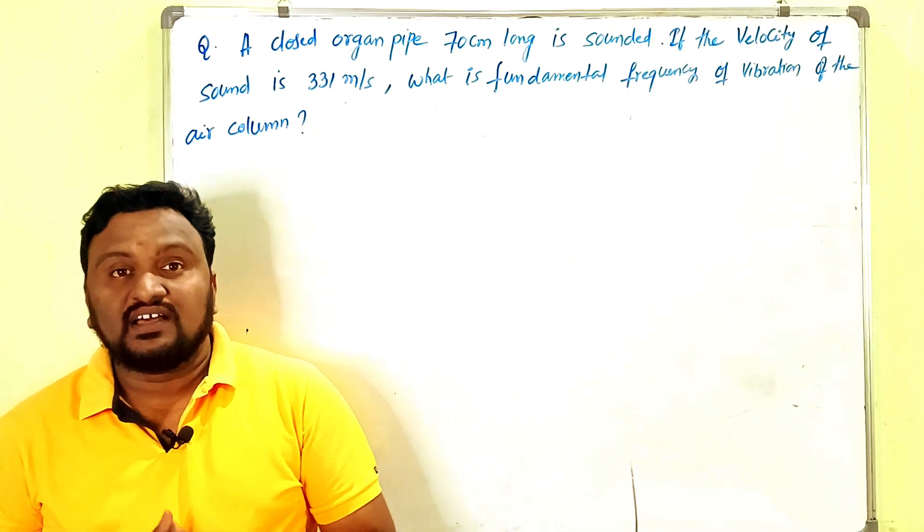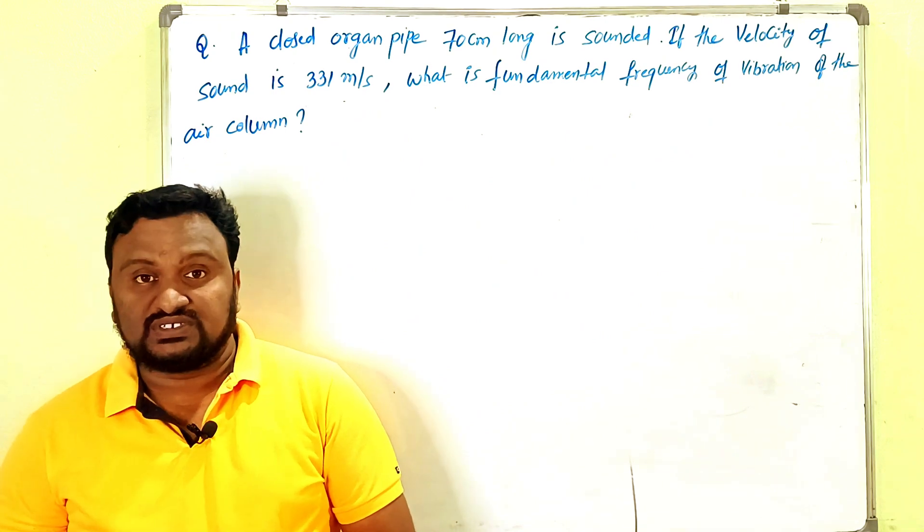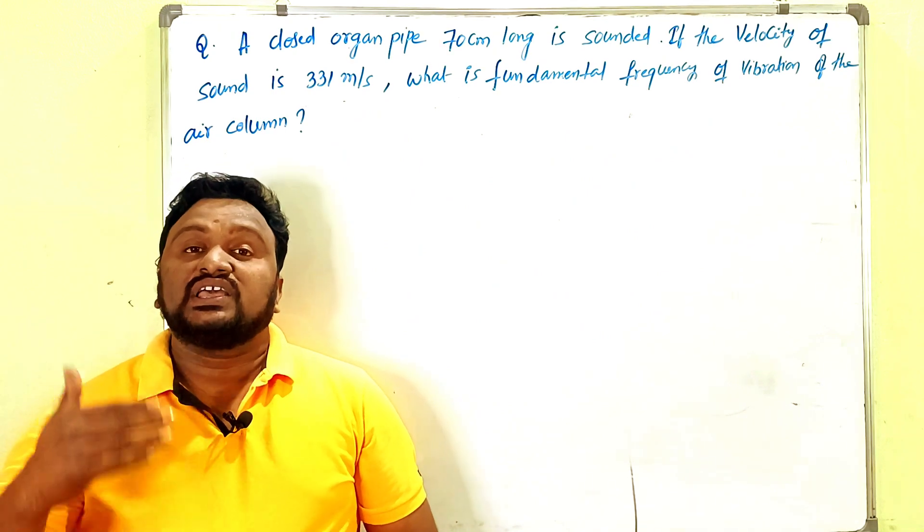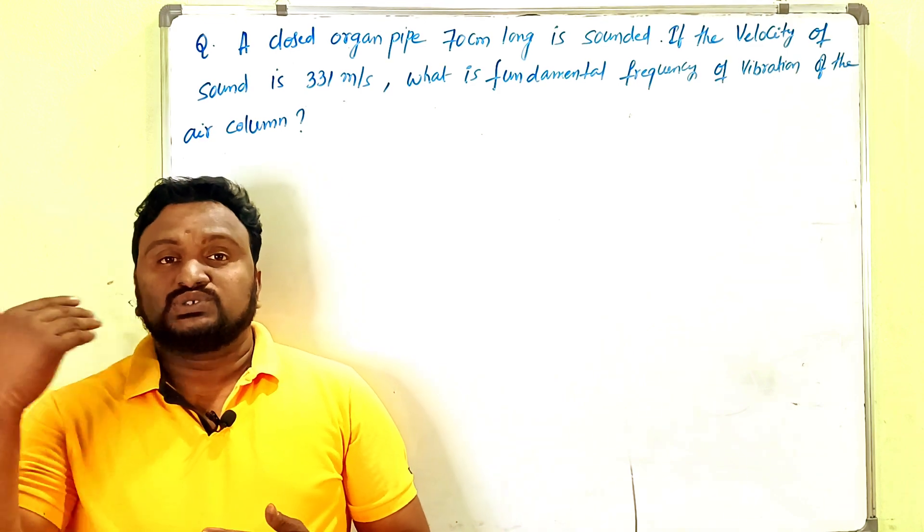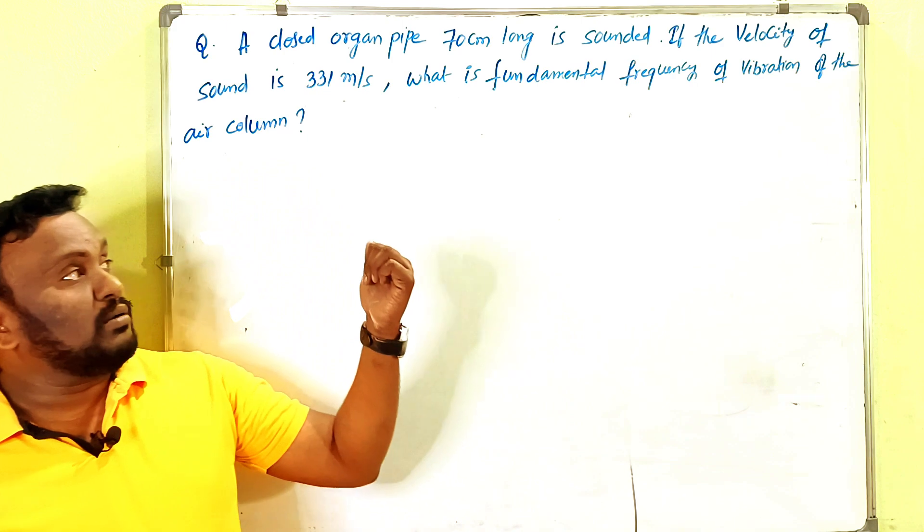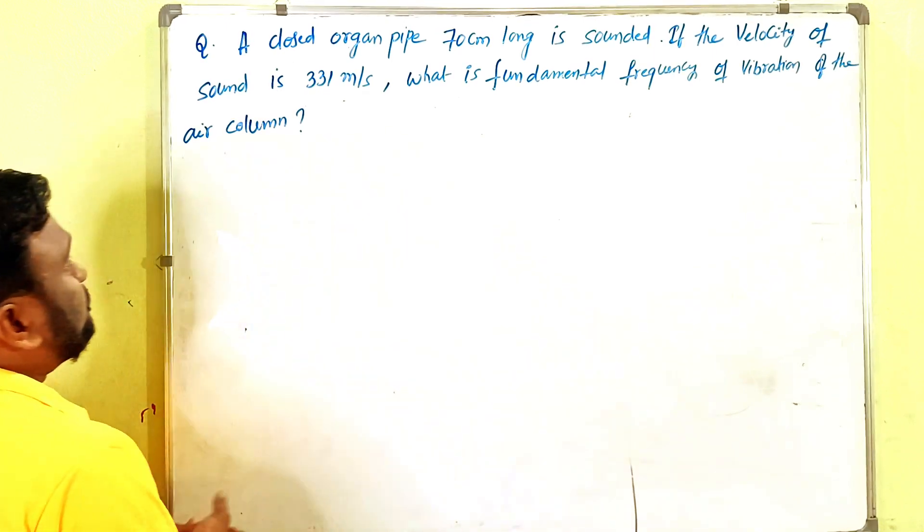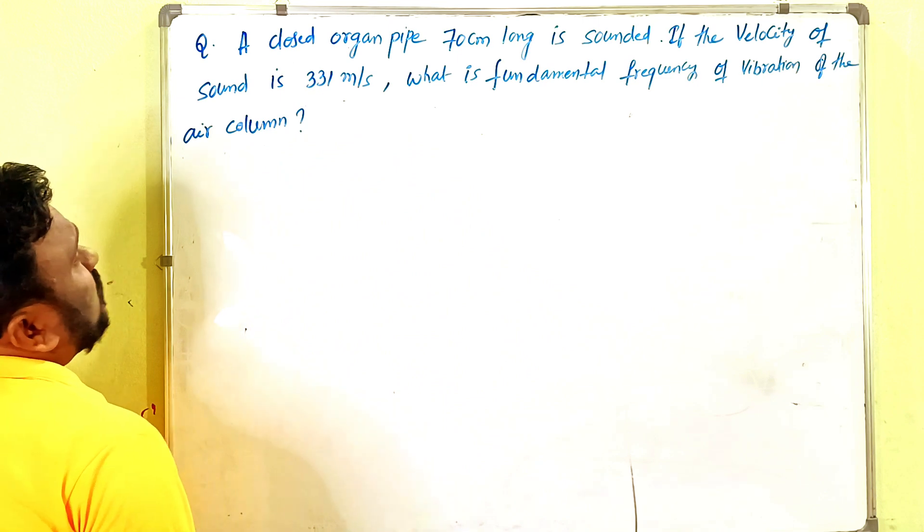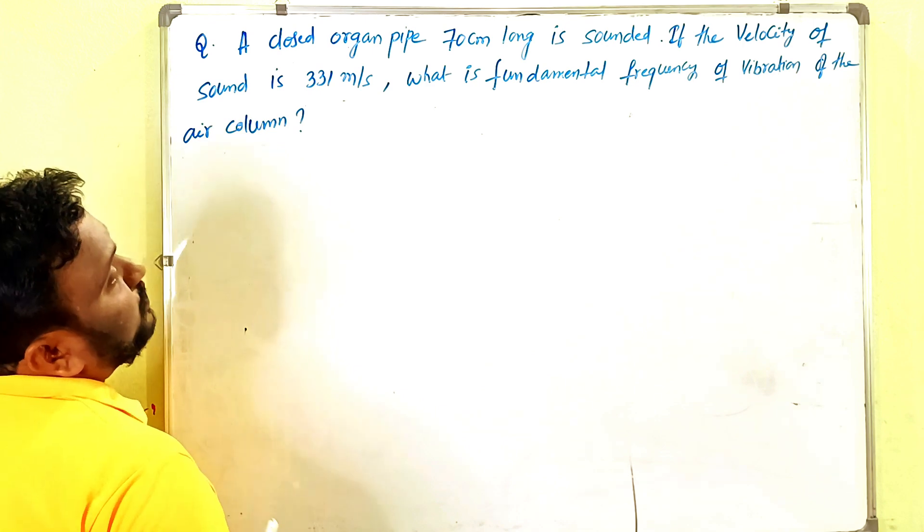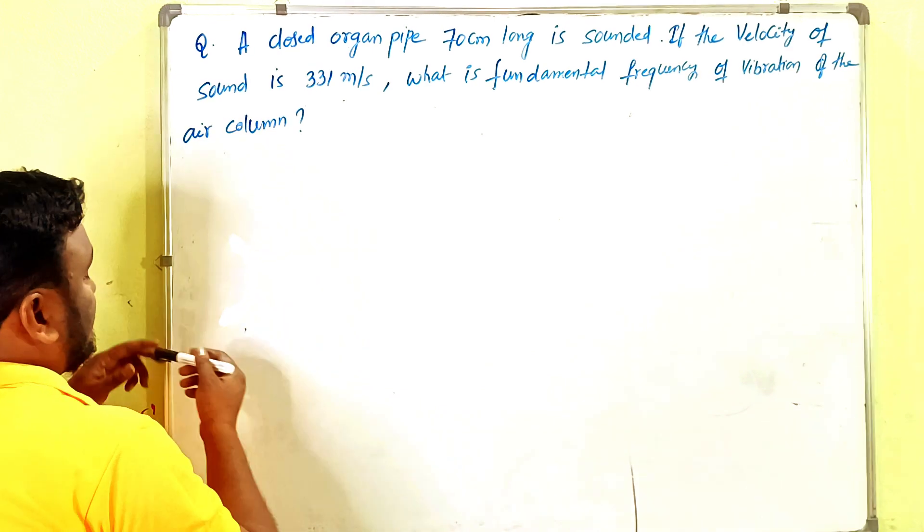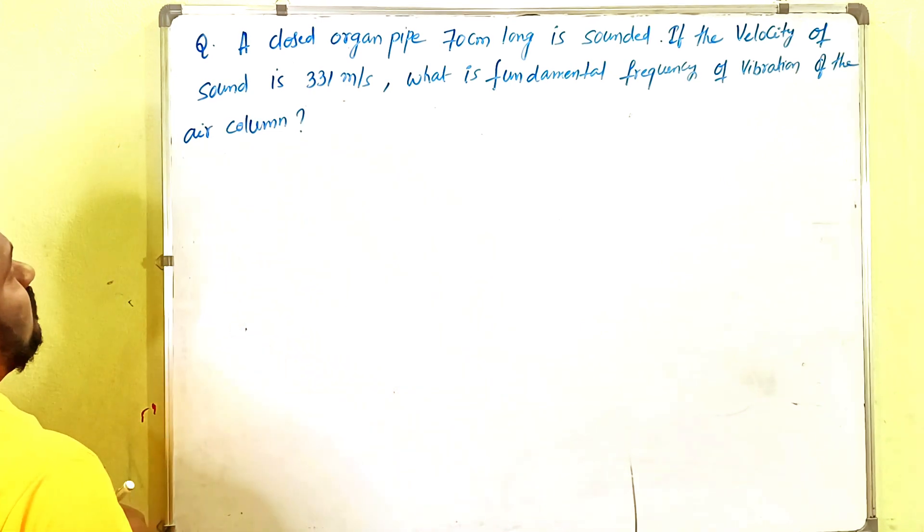Dear students, this is an 8-mark long answer problem from the chapter on waves. For questions involving open pipe or closed pipe, this type of problem is very easy to get marks. Look here: a closed organ pipe of length 70 centimeters is sounded. If the velocity of sound is 331 meters per second, what is the fundamental frequency of vibration of the air column?